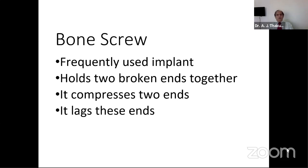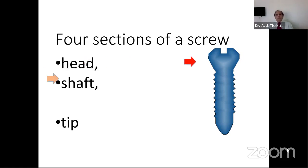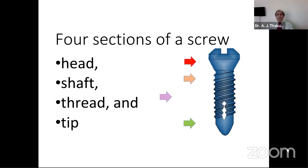Bone screw is the most frequently used implant in orthopedics. What it does is hold two broken ends together and when required, it compresses and lags them. Lag means it does the same thing with either force or compression. Grossly there are four sections of the screw: the head, the shaft, the tip, and the most important part — the threads.